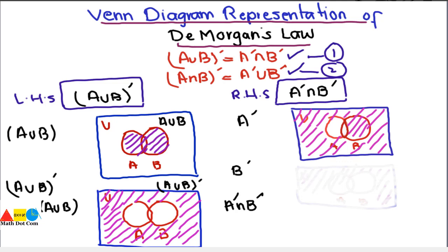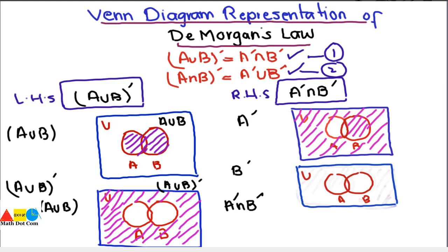Now let's find B complement. With the universal set and sets A and B, B complement equals U minus B — you subtract B from the whole set. The highlighted portion representing U minus B is the Venn diagram of B complement.